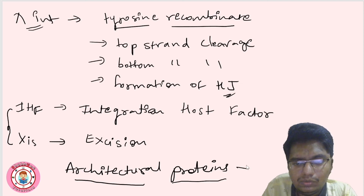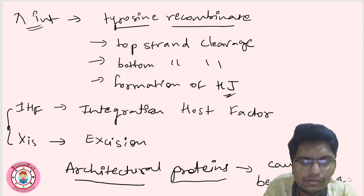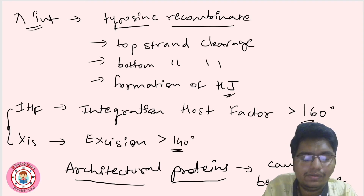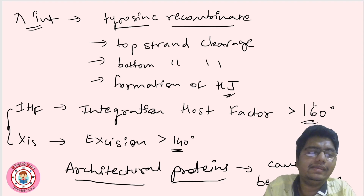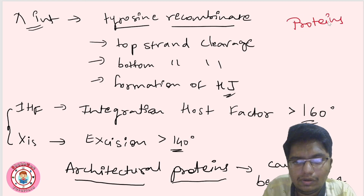What do these architectural proteins do? They cause bending in the DNA. Integration Host Factor causes greater than 60 degrees of bending, while XIS causes greater than 140 degrees of bending. These proteins perform the bending required for the recombination process.